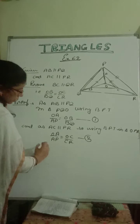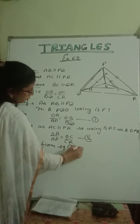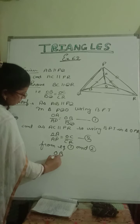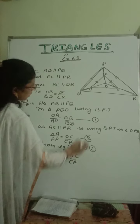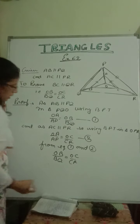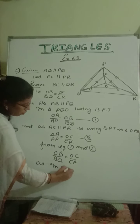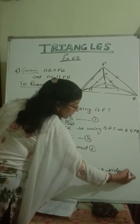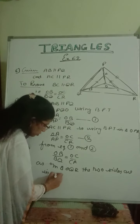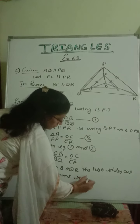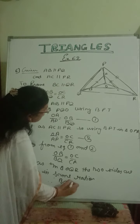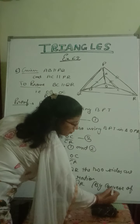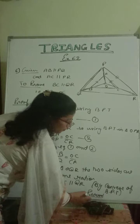From equation 1 and equation 2, these two left-hand sides are the same, so these two right-hand sides will also be equal. Therefore OB upon BQ is equal to OC upon CR. In triangle OQR, the two sides are in the same ratio. Therefore BC is parallel to QR, by the converse of the basic proportionality theorem. This is proved.